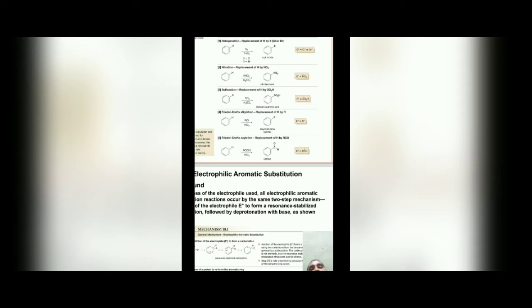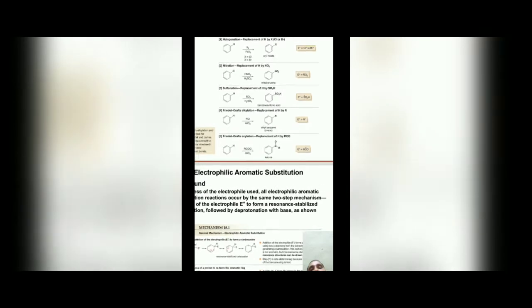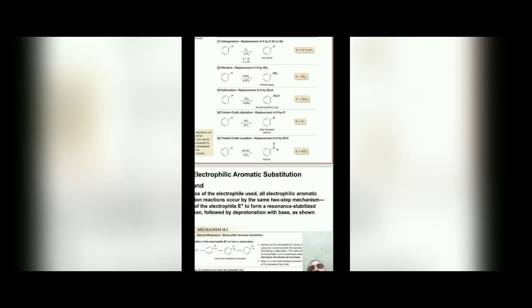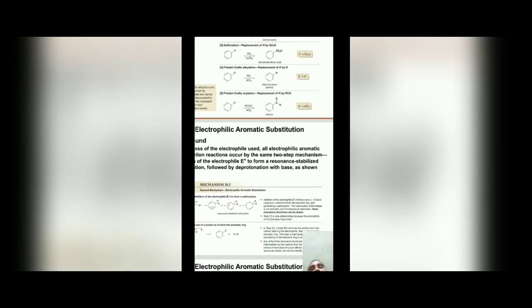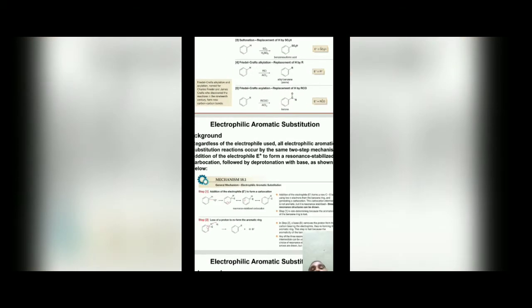The third reaction is sulfonation: benzene reacts with SO3 in the presence of H2SO4 to give benzene sulfonic acid. The SO3H+ species acts as the electrophile, produced by combining SO3 and H2SO4. The fourth is Friedel-Crafts alkylation, where hydrogen is replaced by an alkyl group (R+) to give alkyl benzene. Benzene reacts with alkyl halides in the presence of AlCl3. The fifth is Friedel-Crafts acylation, where hydrogen is replaced by an acyl group (RCO+), an electron-deficient electrophile, to give acyl benzene (a ketone).